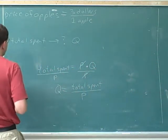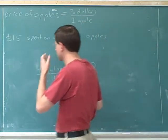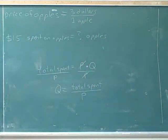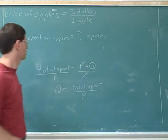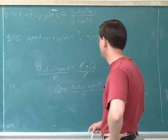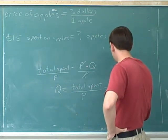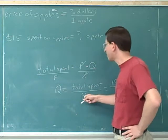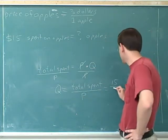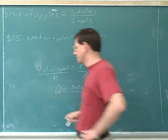For example, going back to an earlier example, we were asking if someone spends 15 dollars on apples, how many apples did they buy? Well, you could just plug into this formula here. The total spent here is 15 dollars and the price of the apples is three dollars, so we ended up with 15 divided by three, which is five apples.